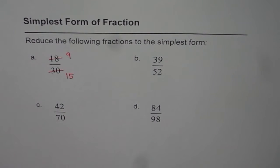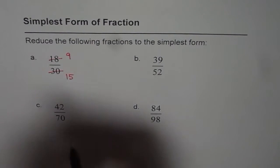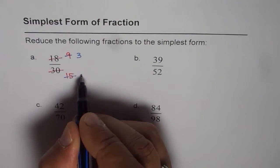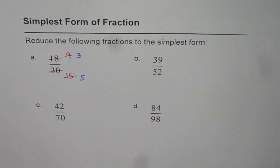Now 9 and 15 both have 3 as a common factor. So I can divide by 3. So I get 3 here and 3 times 5 is 15. So I get 5 here.